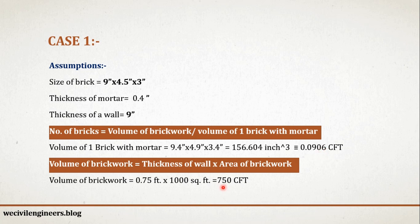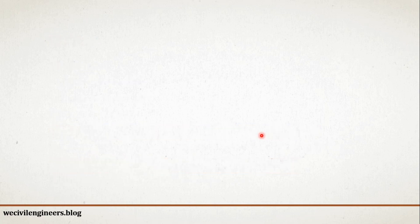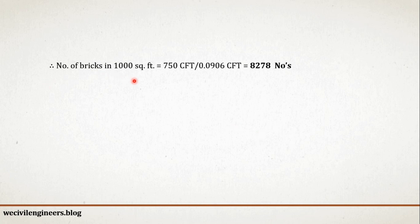156.604 cubic inch is equivalent to 0.0906 cubic foot. Now, substituting these two values into the formula, you will get the number of bricks. Therefore, number of bricks in 1000 square foot equals 750 cubic foot — that is the volume of brickwork — divided by 0.0906 cubic foot, which is the volume of one brick with mortar. If you calculate it, then you will get 8278 number of bricks.